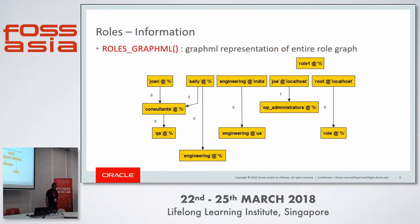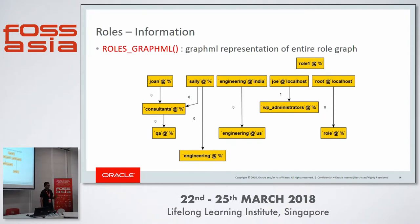We've introduced a way to visualize the role hierarchy. You can see which roles are granted to which users, and whether they are granted with or without admin option. The output is GraphML format, and you can use tools like DIA and GraphML to render it and create a visual representation of your privilege system.